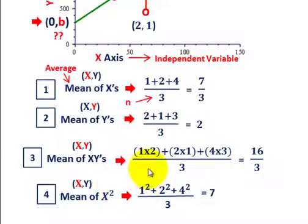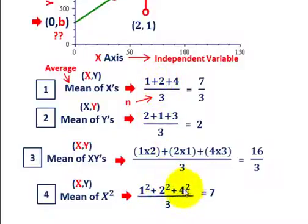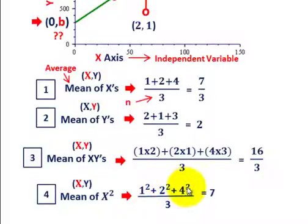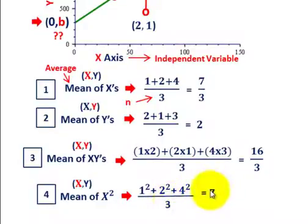Next is the mean of the x-squareds — all we're doing is squaring our x values. The first x was 1, squared gives 1. Add the next x value of 2, squared gives 4. Then the next x value is 4, squared gives 16. So we have 1 plus 4 plus 16, which is 21, divided by 3 data points, giving us 7. So the mean of the x-squareds is 7.